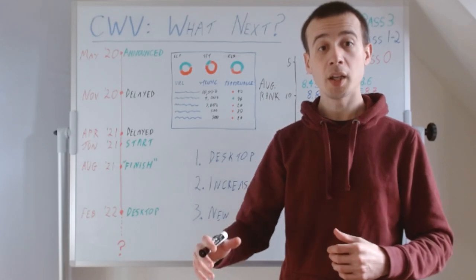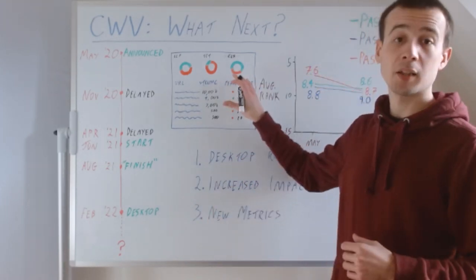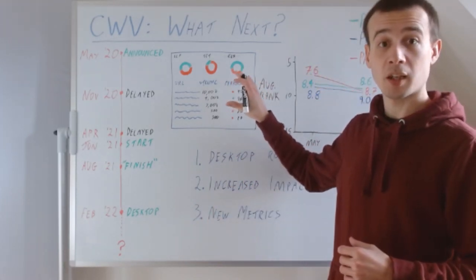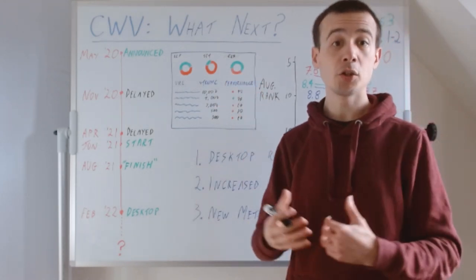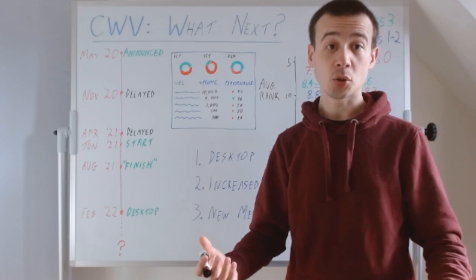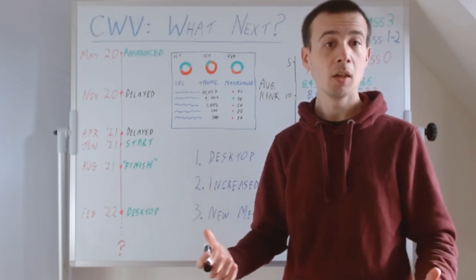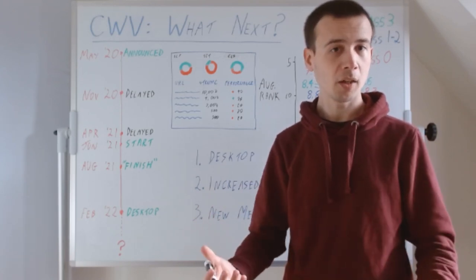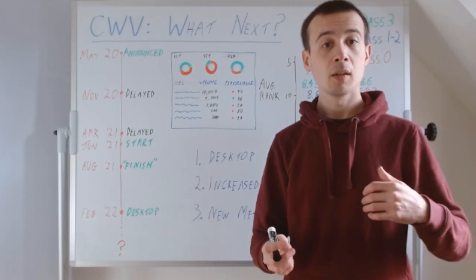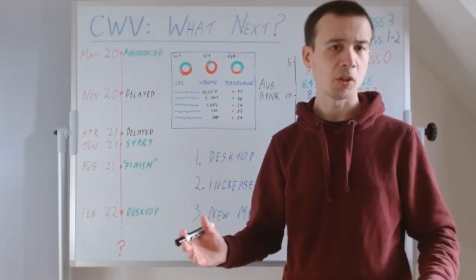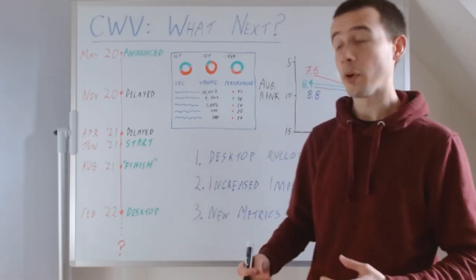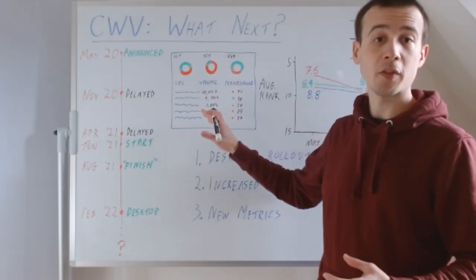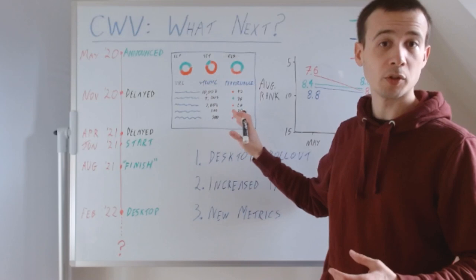But this is why whenever we display Core Web Vitals data in Moz Pro, and whenever we talk about it publicly, we encourage you to look at your highest traffic or most important pages or your highest ranking pages, that kind of thing, rather than just looking at your slowest pages or something like that. You need to prioritize and triage. So we encourage you to sort by traffic and look at that alongside performance or something like that.